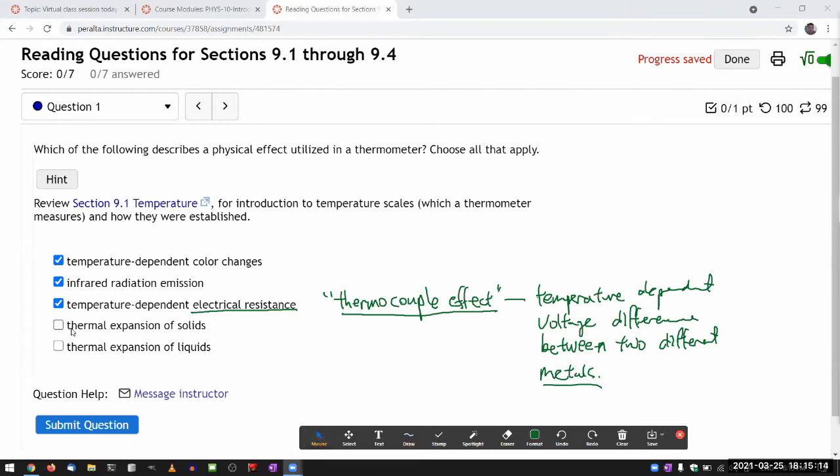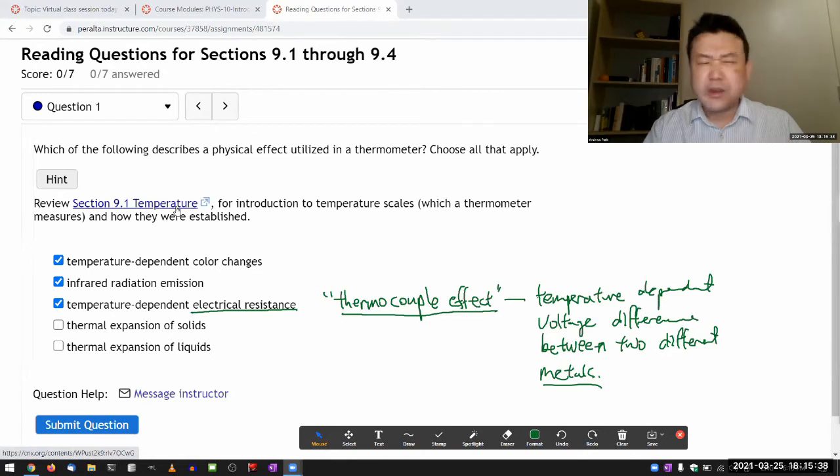Let's keep going. Thermal expansion of solids. Yeah, I think the textbook section describes a bimetallic strip. This is a common thing people use for a thermostat. Thermostat setting is set through a bimetallic strip, or if you have household appliances that use differential thermal expansion of different metals as a kind of thermometer.